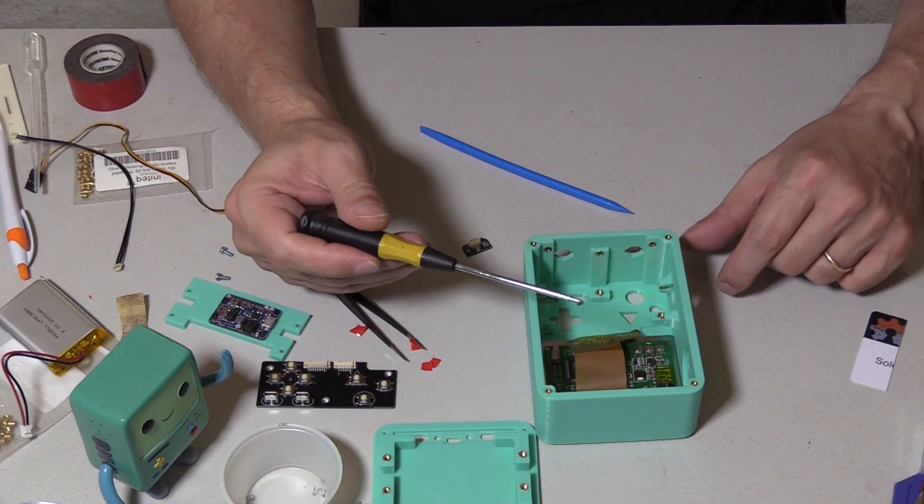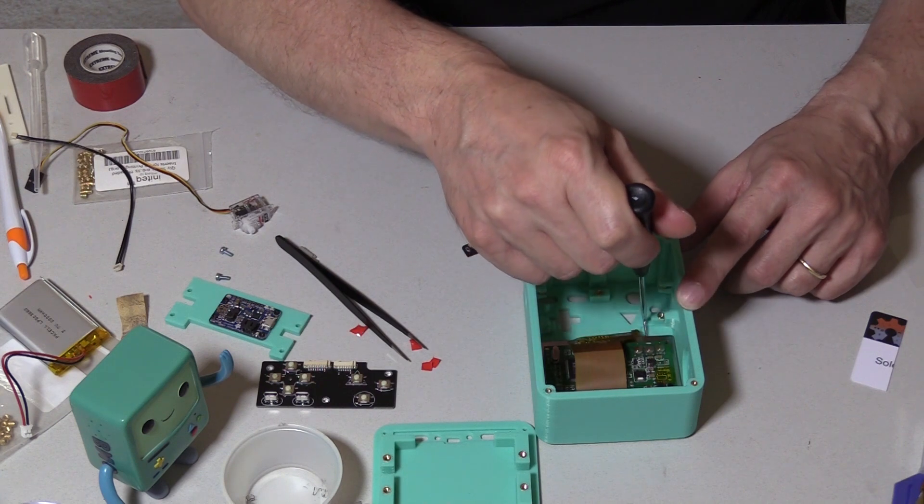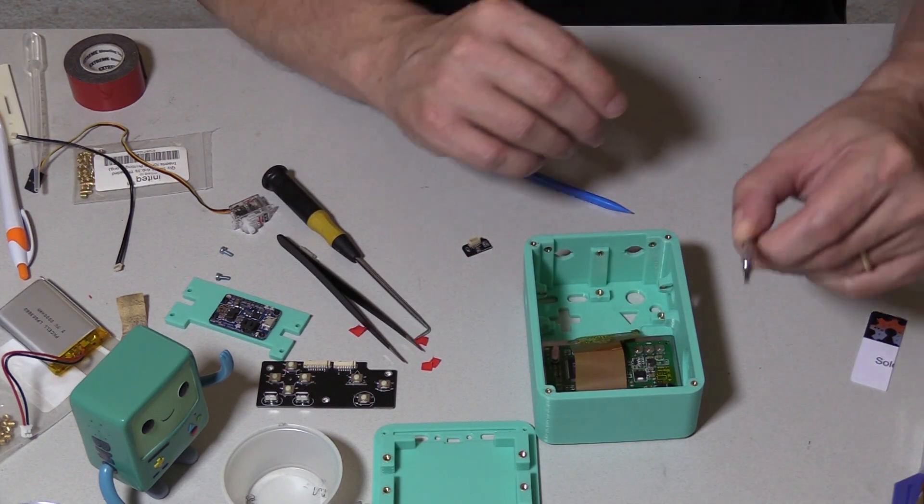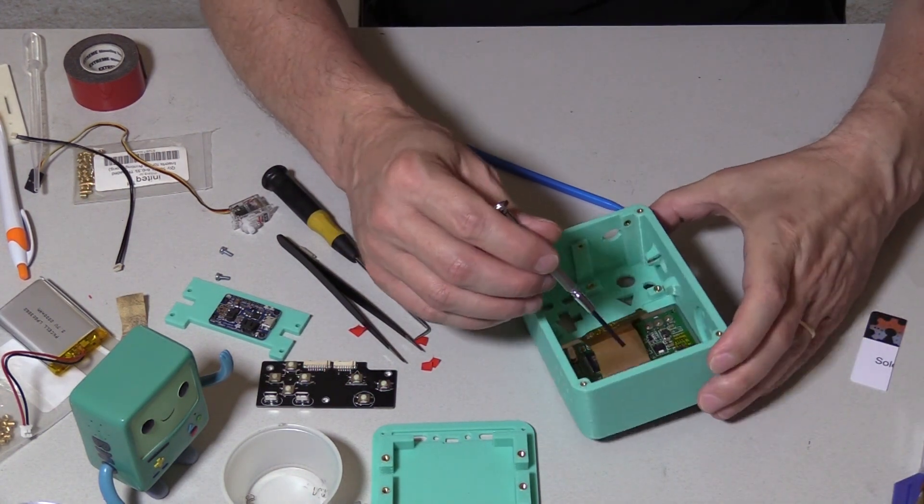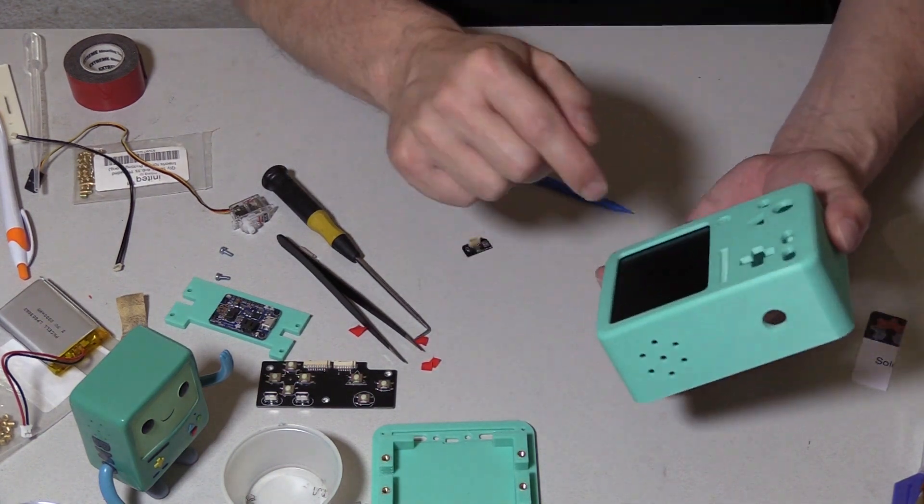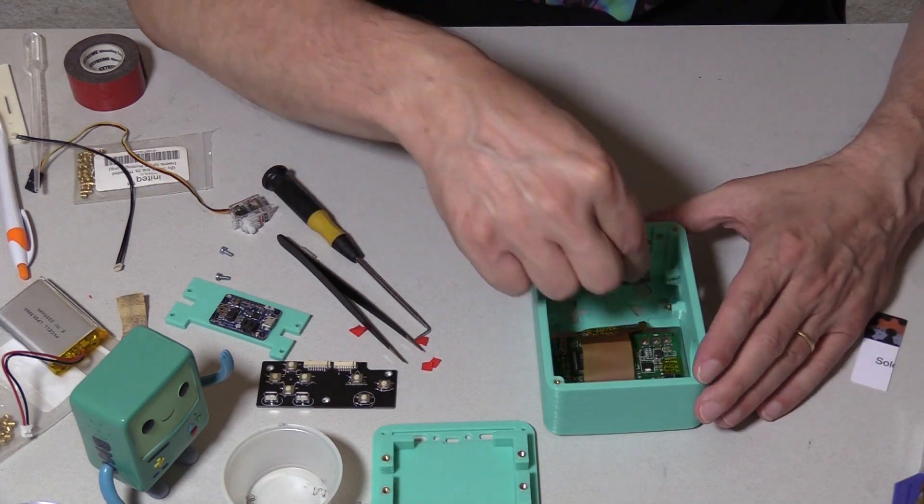What I do is I use this little hook tool and I go into the microphone slot. And you can just pry it up a little bit. And using a tiny flat screwdriver, you can nudge it forward and then slide it right out. The temptation to poke this, you will damage the screen. I've done it. It looks like garbage afterwards.